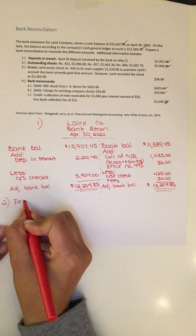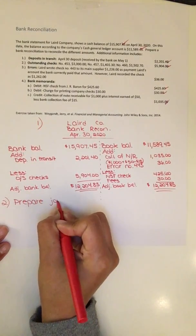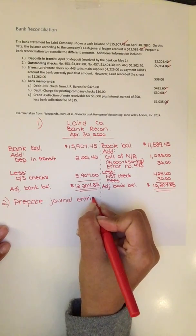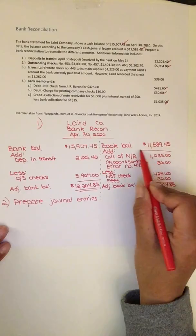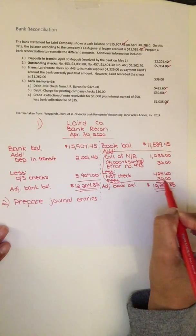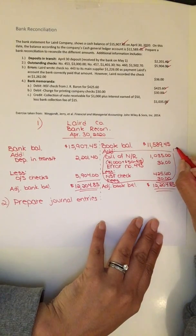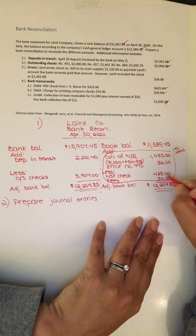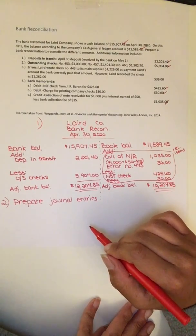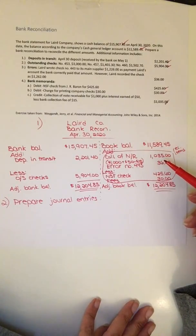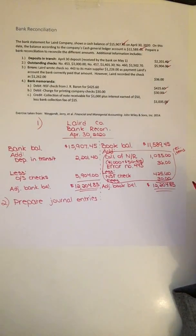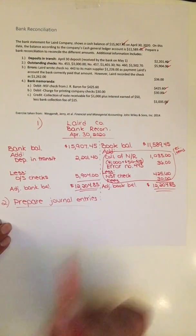The second step is to prepare journal entries. The reason we have to do the reconciliation first is that step helps us identify what needs to have a journal entry prepared. So everything that shows up on the book side as an adjustment — these are called reconciling items — all of these items need to have journal entries prepared. That's the only way we can move the balance to what it should be. The only way we impact company accounts is through journal entries, as we've seen time and again in the accounting cycle.